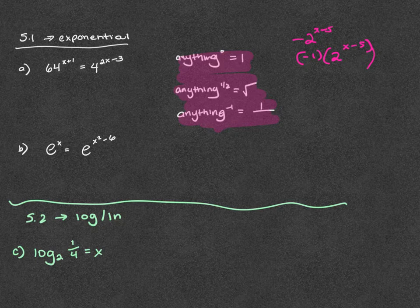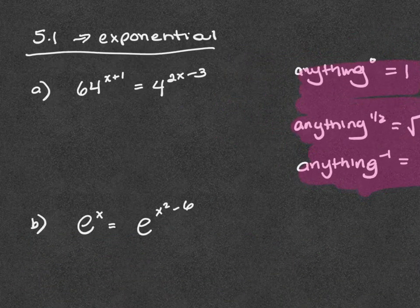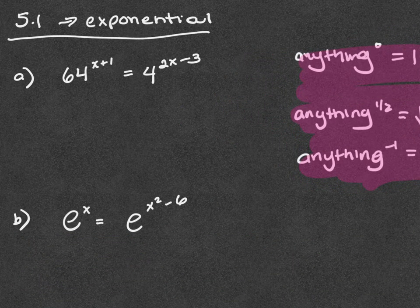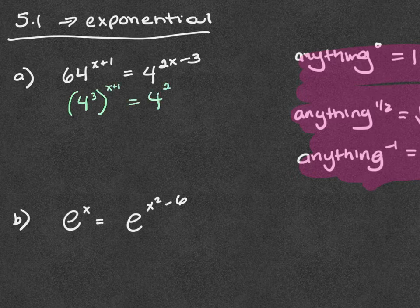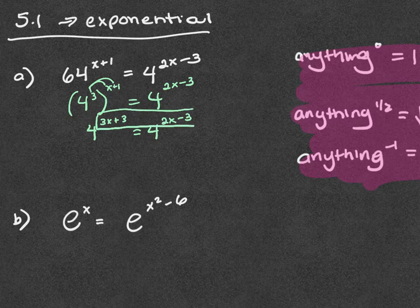In the exponential part of the quiz you're going to want to change the base — this is where your one-to-one property comes in. To solve 64 to the (x plus 1) equals 4 to the (2x minus 3), change 64 to 4 to the third. So you get 4 to the third raised to the (x plus 1) equals 4 to the (2x minus 3). Distribute: 4 to the (3x plus 3) equals 4 to the (2x minus 3). The bases are the same so set the exponents equal.